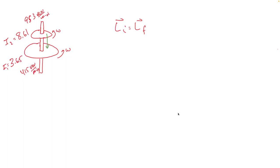The reason I know to use conservation of angular momentum is not only is this the chapter on conservation of angular momentum, but we have a collision — an interaction between two things. We know something about before, we want to know something about after. That's a lot like the chapter 9 linear collisions. We have the angular momentum of the first disk and the angular momentum of the second disk separately. Afterwards, we have the angular momentum of the combination.